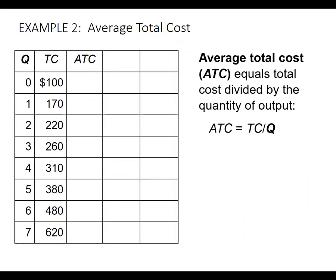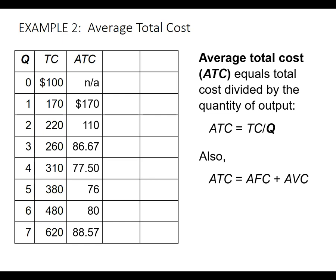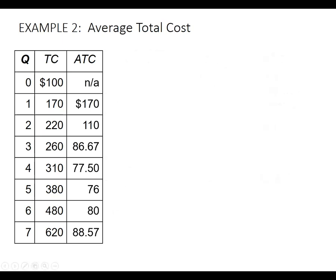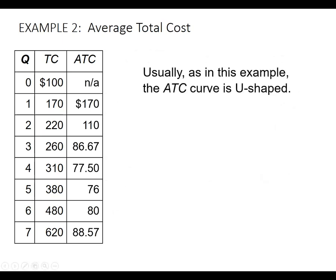Average total cost is going to be the total cost divided by the quantity. Something important to remember is that average total cost equals average fixed cost plus average variable cost. So if we get the average fixed cost and the average variable cost, we can add them together to get the average total cost. For example, 52.50 plus 25 is 77.50 — it's always going to work because it has to. As average fixed cost decreases, average variable cost is going to increase.